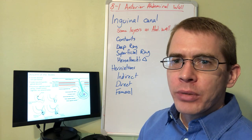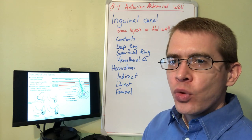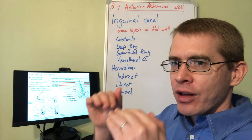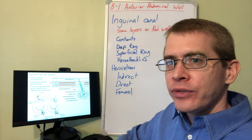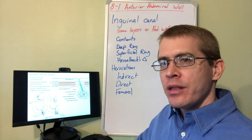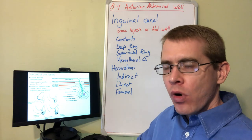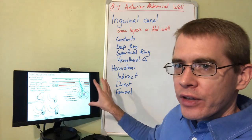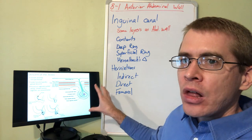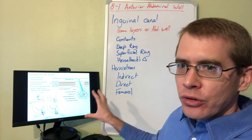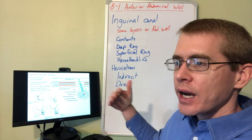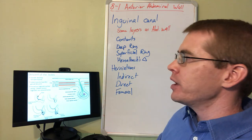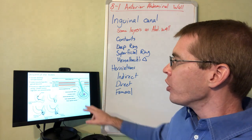This is the third part of 8-1. We're moving inferior in the abdominal wall to look at the structures of the inguinal canal, which are identical to or derived from the structures of the abdominal wall.